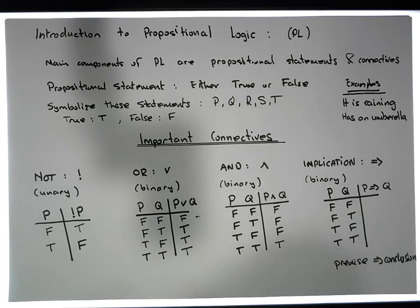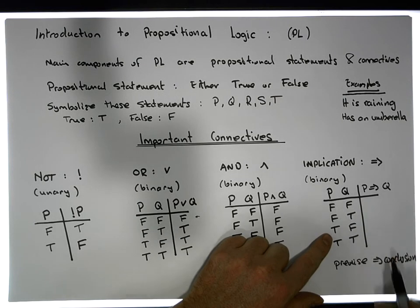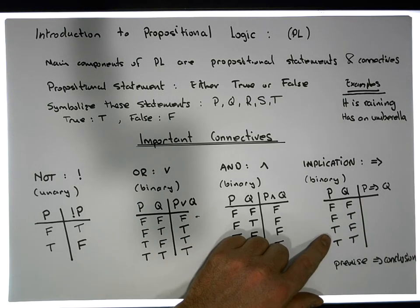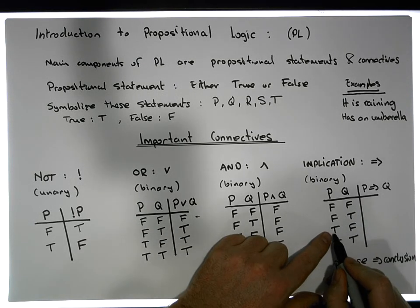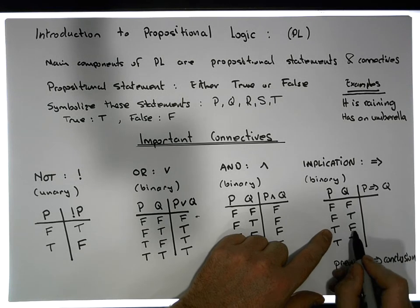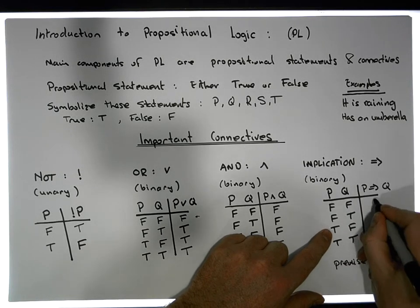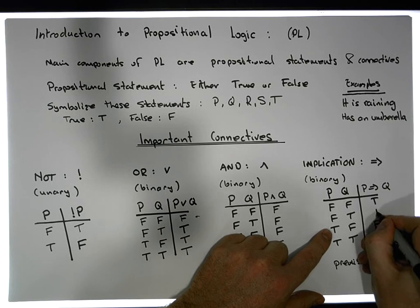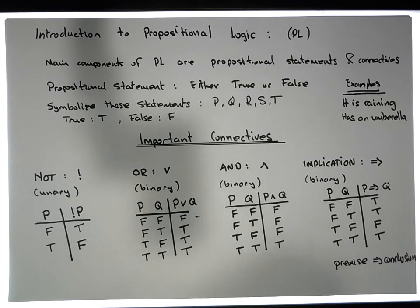Let me fill in the truth table. The only time it's ever false is when the premise is true and the conclusion is false. Everywhere else it's true. Let's give an example to rationalize what's going on.